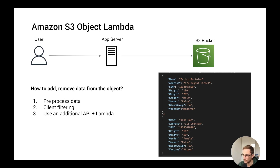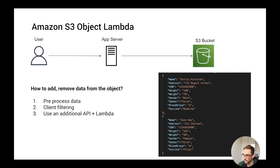A slightly better option is adding an additional API endpoint with API Gateway and a Lambda function if you want to keep it serverless. For every use case — say you want anonymized data or you want to add data — you have a different API endpoint. The client sends a request to that API endpoint, the Lambda function pre-processes and post-processes the data and sends it back to the client. This is a slightly better approach, but it still needs development work and requires adding a new endpoint for each new use case.